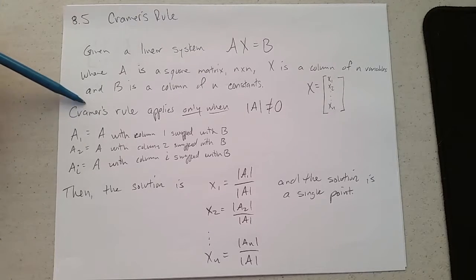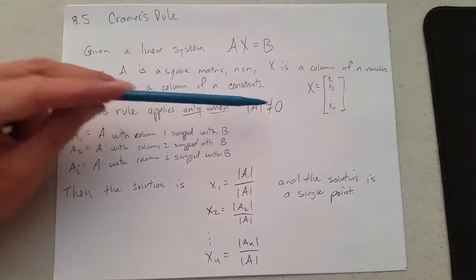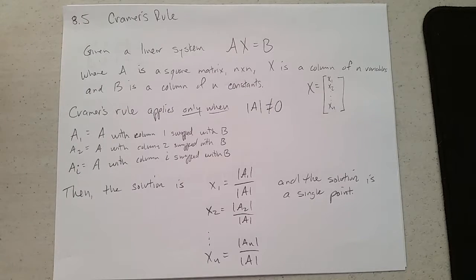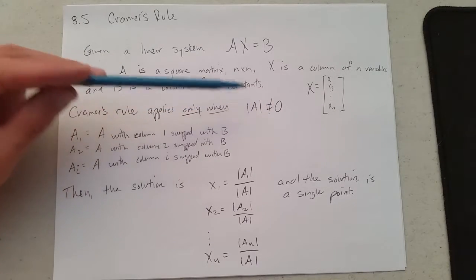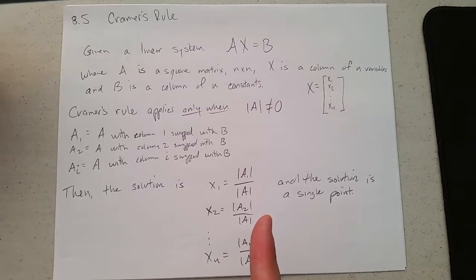Cramer's rule can only be used when the determinant of your original matrix is not equal to zero. If your determinant is not zero, you're going to get a single solution.